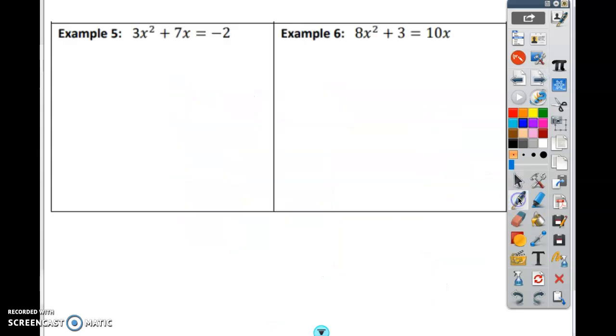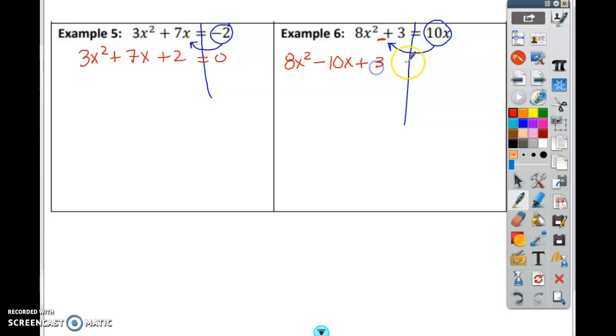Go ahead and pause the video. Do problem 5 and 6 by yourself. Before you do 5 and 6, this one needs to be moved over. Change the sign. And this one needs to be moved over. Change the sign. So this becomes a positive. So that's 3x squared plus 7x plus 2 equals 0. And this one's going to end up right here in the middle of both of those, but it's going to be a negative. So that's 8x squared minus 10x plus 3 equals 0. It always has to equal to 0. So pause the video and work those two problems out. You can use decimals if you want, or you can do it by hand.